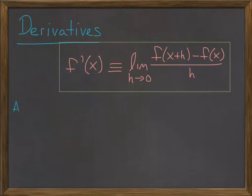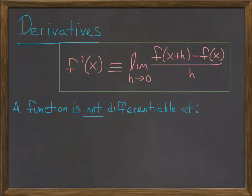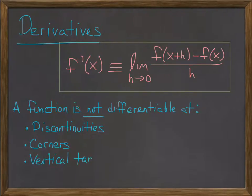It's important to know where a function is not differentiable. If a function is not continuous, it can't be differentiable, so the function is automatically not differentiable at discontinuities. Corners, and the one that people forget, function is not differentiable at vertical tangent lines, and that's distinct from vertical asymptotes.